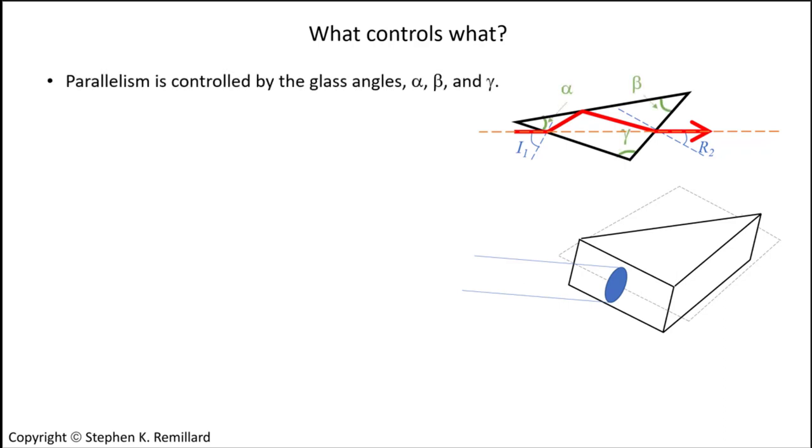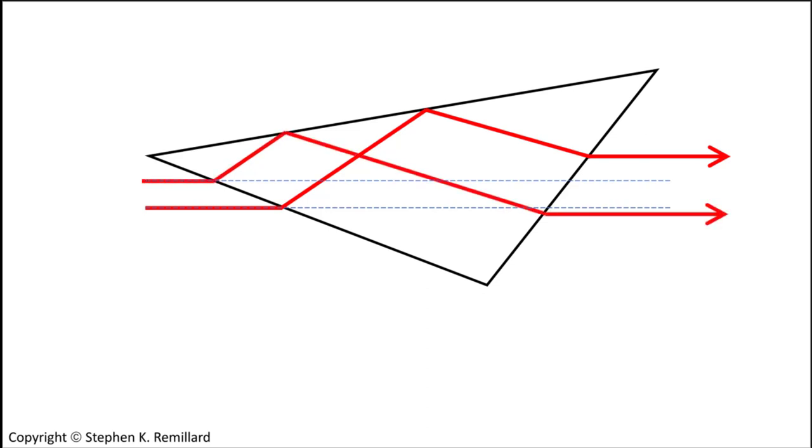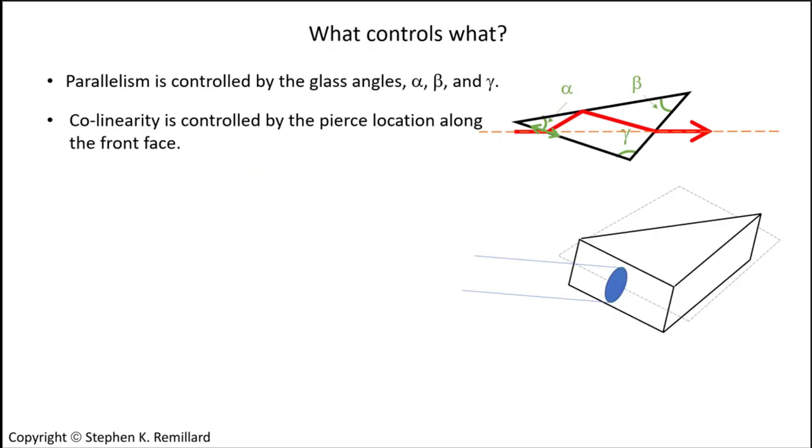The three angles of the prism control the direction of the outgoing beam and render it parallel to the incoming beam. Where the beam strikes the front entry face determines whether the input and output beams are collinear. Suppose a beam is incident at this height, it will emerge too high. Suppose it is incident at this height, it will emerge too low. Suppose the beam is incident at the mama bear height, it will emerge just right.